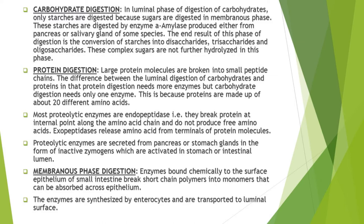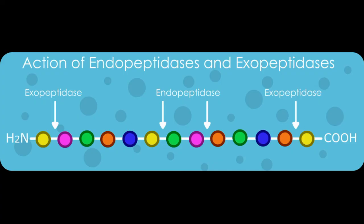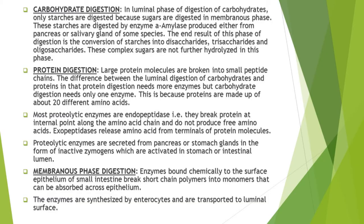In the luminal phase of protein digestion, large protein molecules are broken into smaller peptide chains. Unlike carbohydrate digestion which needs only one enzyme, protein digestion needs more enzymes because proteins are made up of 20 different types of amino acids. There are two types of proteolytic enzymes: endopeptidases, which break the protein at internal points within the amino acid chain and don't produce free amino acids, and exopeptidases, which release amino acids from the terminal of the protein molecule.